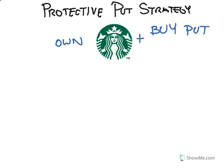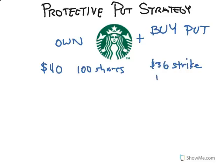Let's say currently the shares of Starbucks are trading at about $40 per share and you have 100 shares. Recently there's an article in Bloomberg that talked about people buying puts at a $36 strike price and January expiration. That basically means those folks that bought those have the option to sell at $36 and they have that option until January. After that, they either have to buy another option or this option just goes away.